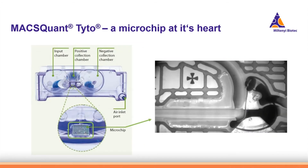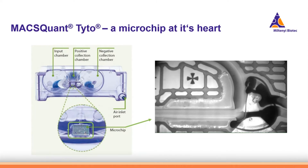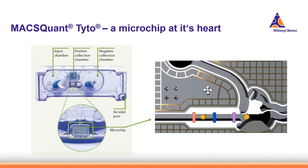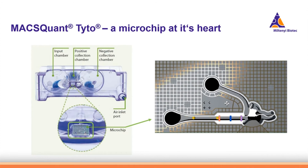Let's have a look at this in real life. The valve is opening and closing, and here the green cells are sorted into the positive collection chamber.